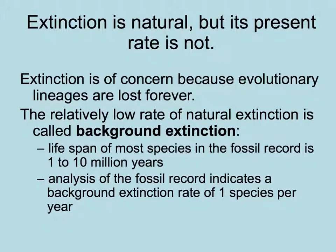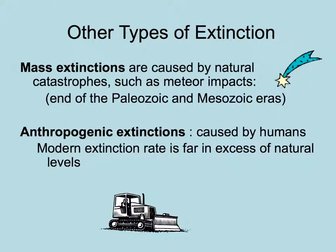In the fossil record, we can see that the lifespan of most species is from 1 to 10 million years. By looking at the fossil record, we can figure a background extinction rate of one species per year. Another kind of natural extinction is mass extinction, such as that caused by a meteoric impact that happened at the end of the Paleozoic and Mesozoic eras, causing extinctions of big groups of organisms.